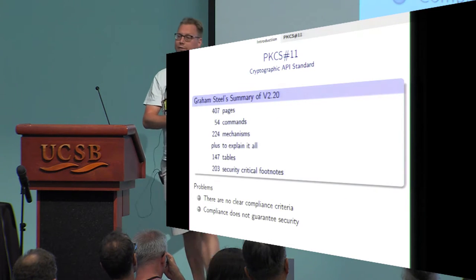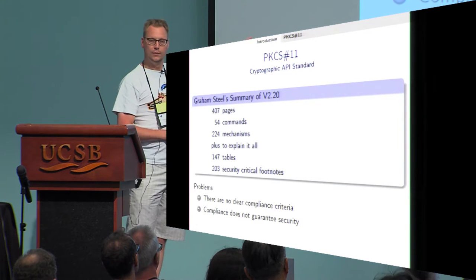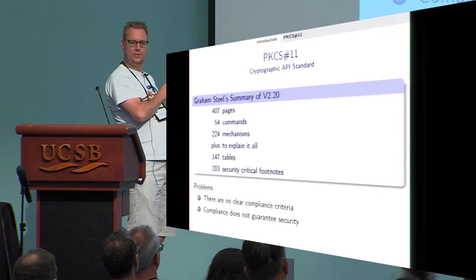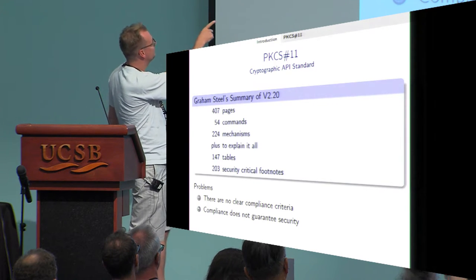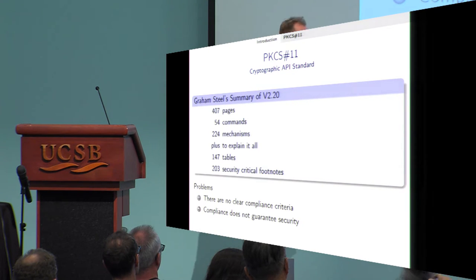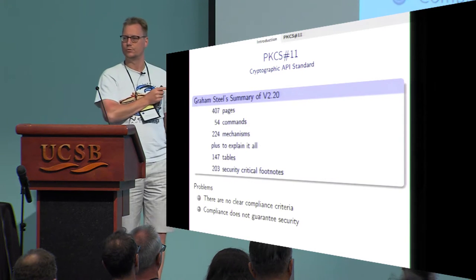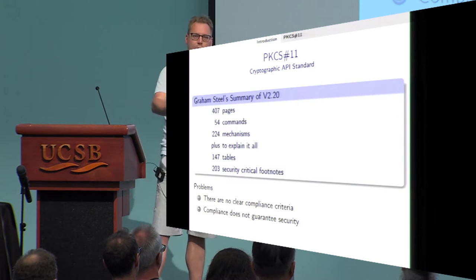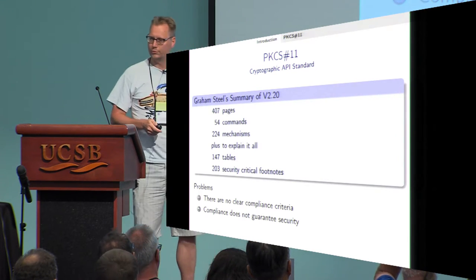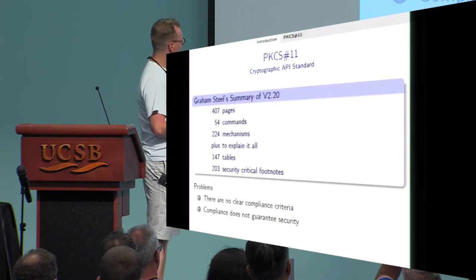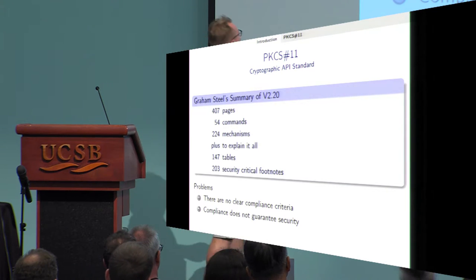There's also a nice summary by Graham Steele on version 2.20: 407 pages, 54 commands, 224 mechanisms, 147 tables, and two or three security-critical footnotes. This is why we have to select a subset to start work — because if you want to prove something about 407 pages of standard, you might not fit within the call for papers of Crypto.